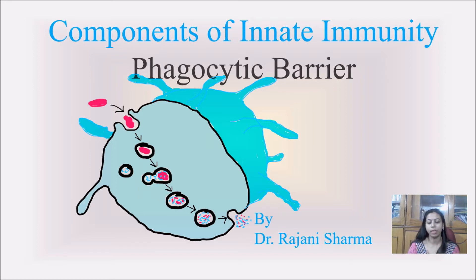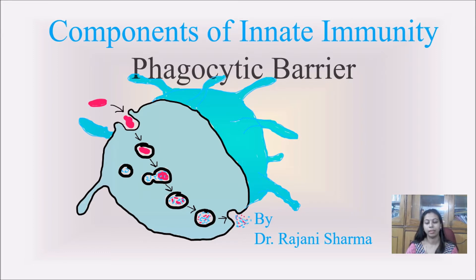Just like small kids — whatever they get in their hands, they have a tendency to put it inside their mouth — similarly our immune system also has certain cells like macrophages, blood monocytes, and natural killer cells, which have the ability to engulf whatever things enter inside our body.